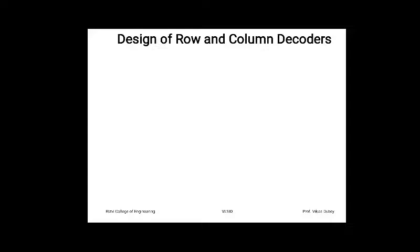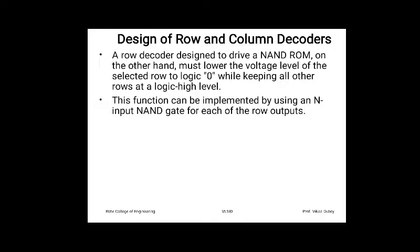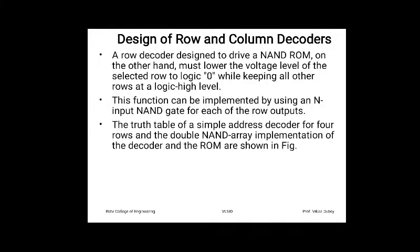Next we will see the design of row and column decoders for the NAND based ROM. A row decoder designed to drive a NAND ROM must lower the voltage of the selected row to logic 0 while keeping all other rows at logic high. This is because for the selected row we need its voltage to be zero, while all non-selected rows must remain at logic 1.